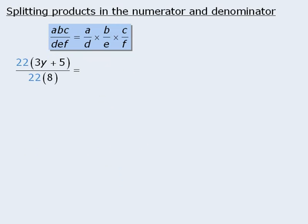Now we can also apply the same property to simplify algebraic expressions. In the past, you may have heard people say that we can take a fraction like this one and simply cross out the 22's in the numerator and denominator to get a simplified fraction 3y plus 5 over 8. What's really happening here is that we are applying the above rule to rewrite the fraction as the product of two fractions.